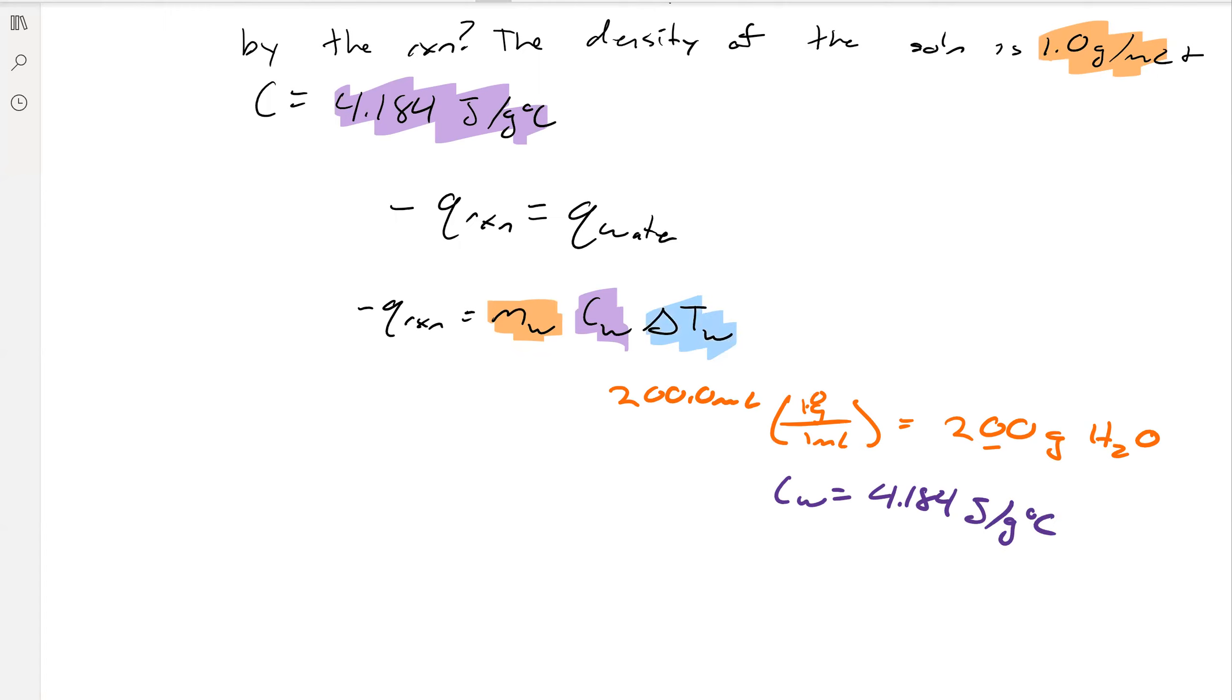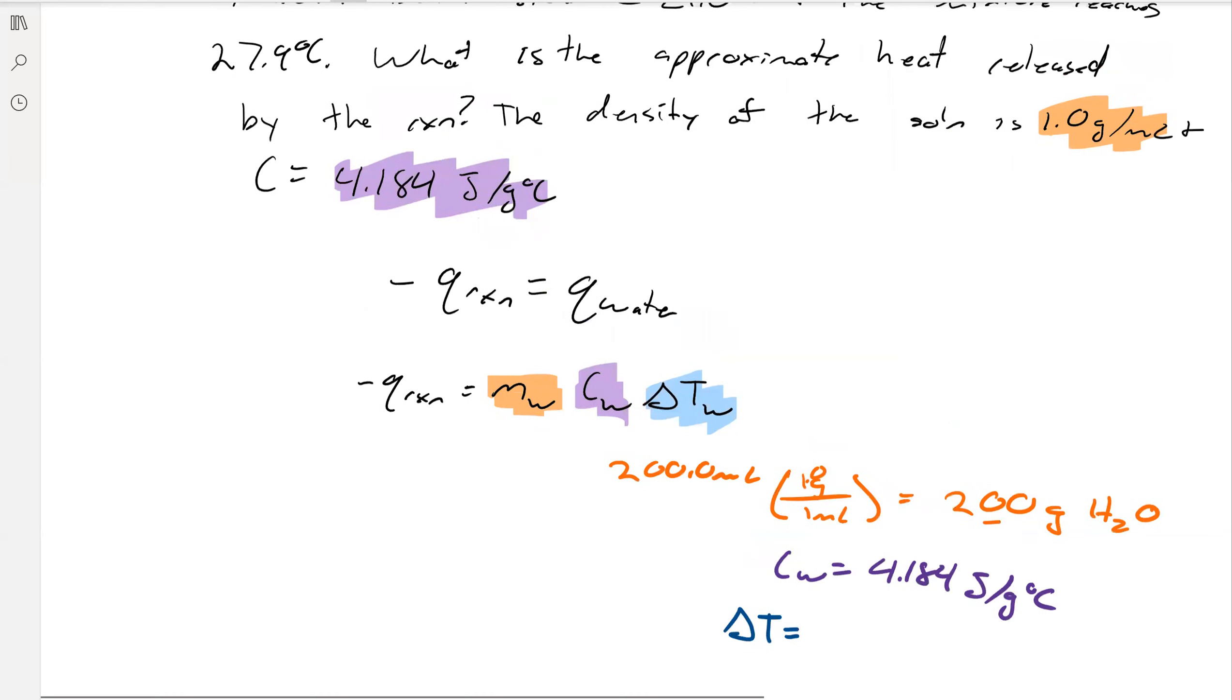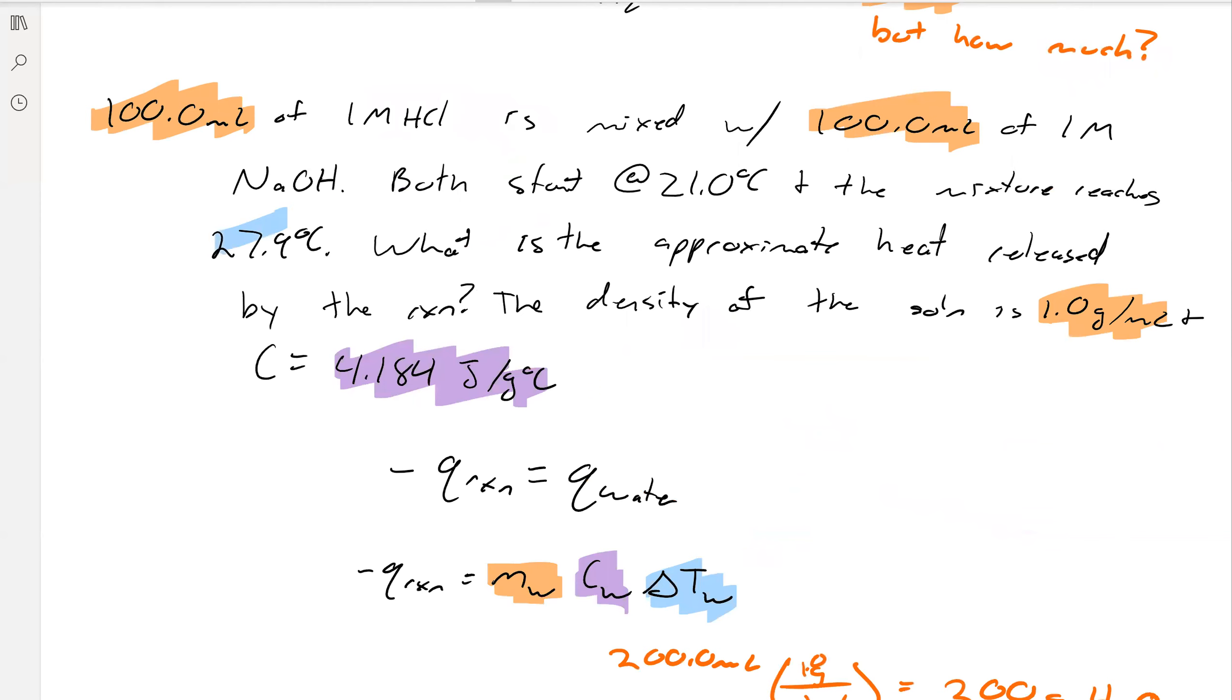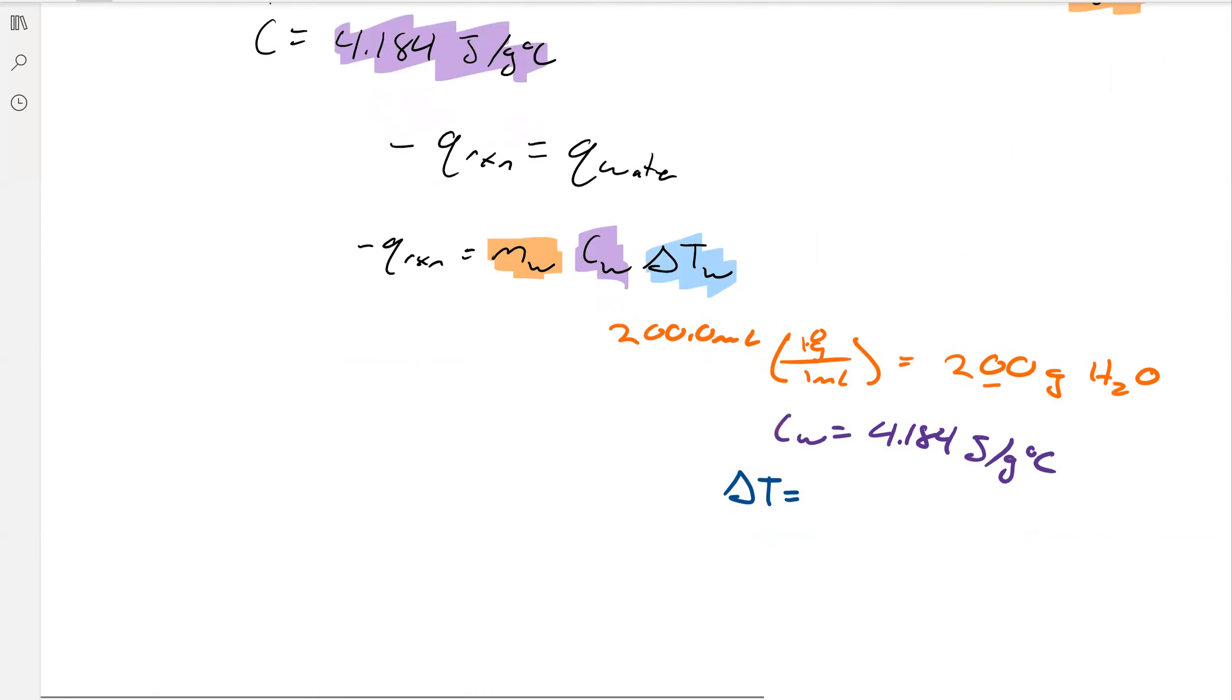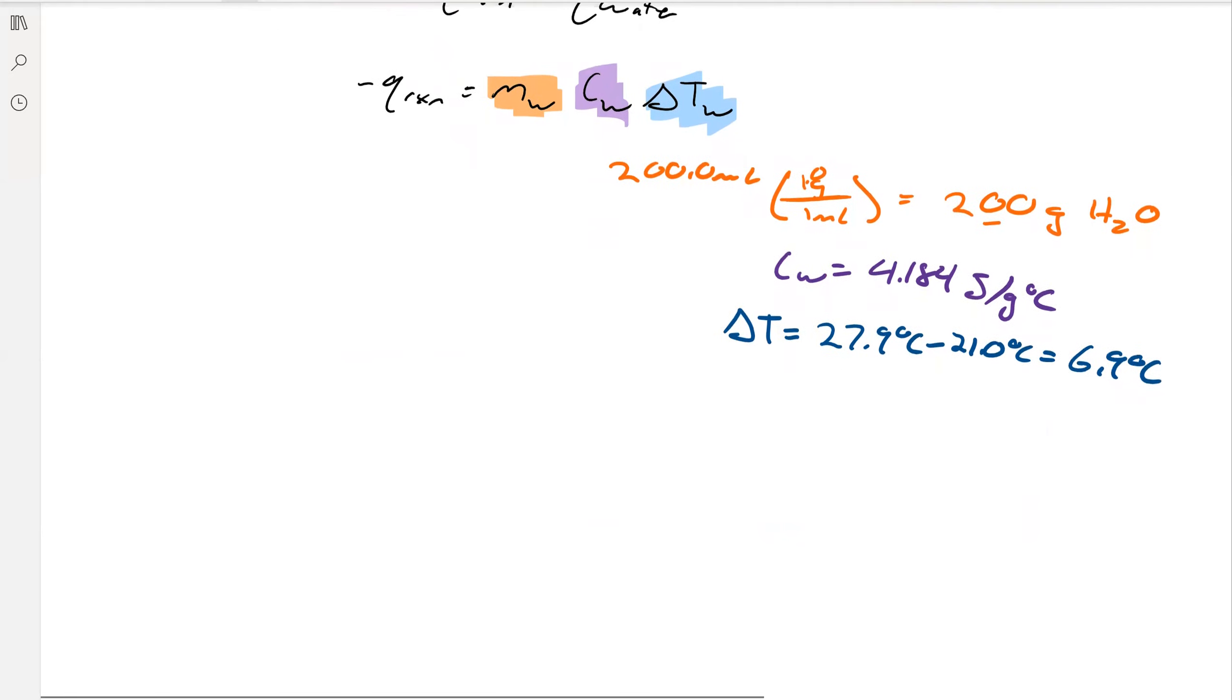If we think about what our delta T is, that's T final minus T initial. The solution ended up at 27.9 and started at 21.0 to give us a change of 6.9 degrees Celsius.